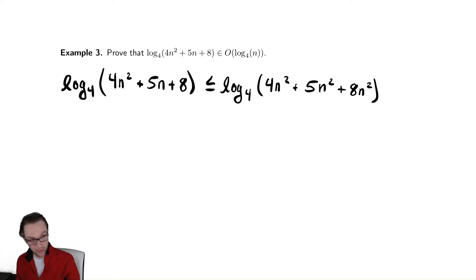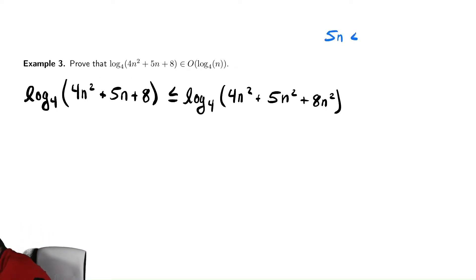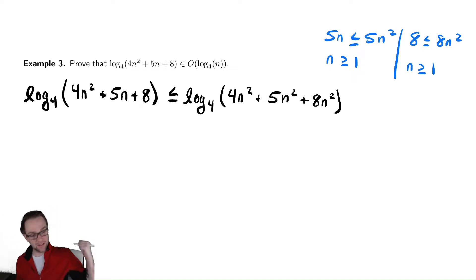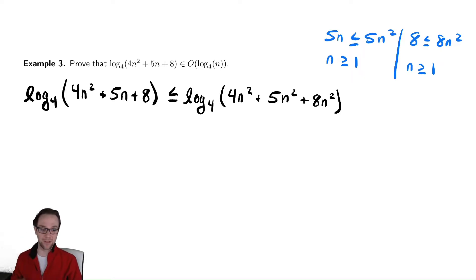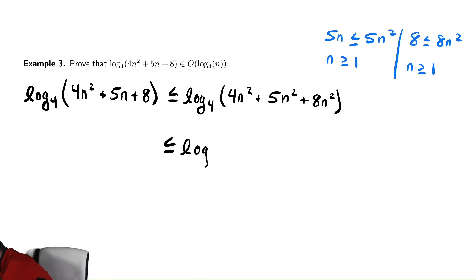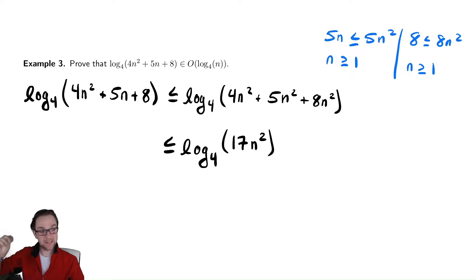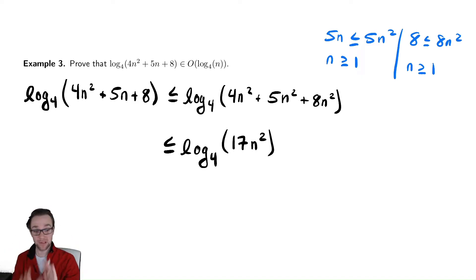Just like before, we need to find out when these things are true. When is 5n less than or equal to 5n squared? That's when n is greater than or equal to 1. Similarly, when is 8 less than or equal to 8n squared? By the exact same reasoning, that is when n is greater than or equal to 1. The nice thing about this approach is that this algebra remains relatively similar for every problem, so you can cut down on the creativity. Let's collect like terms — but remember, to show something is in big O, we need it to be a constant times the given function, so we're not done yet.